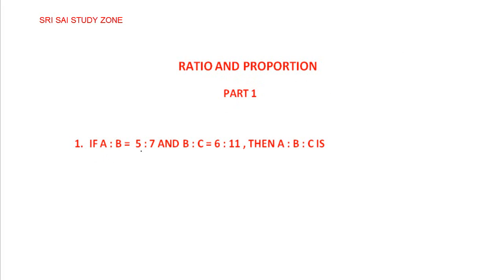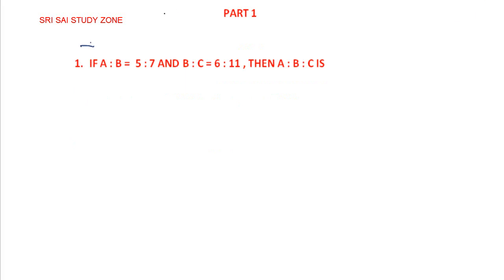If a is to b is equal to 5 is to 7, and b is to c is equal to 6 is to 11. We will find a is to b is to c. This is a normal question on ratio and proportion.